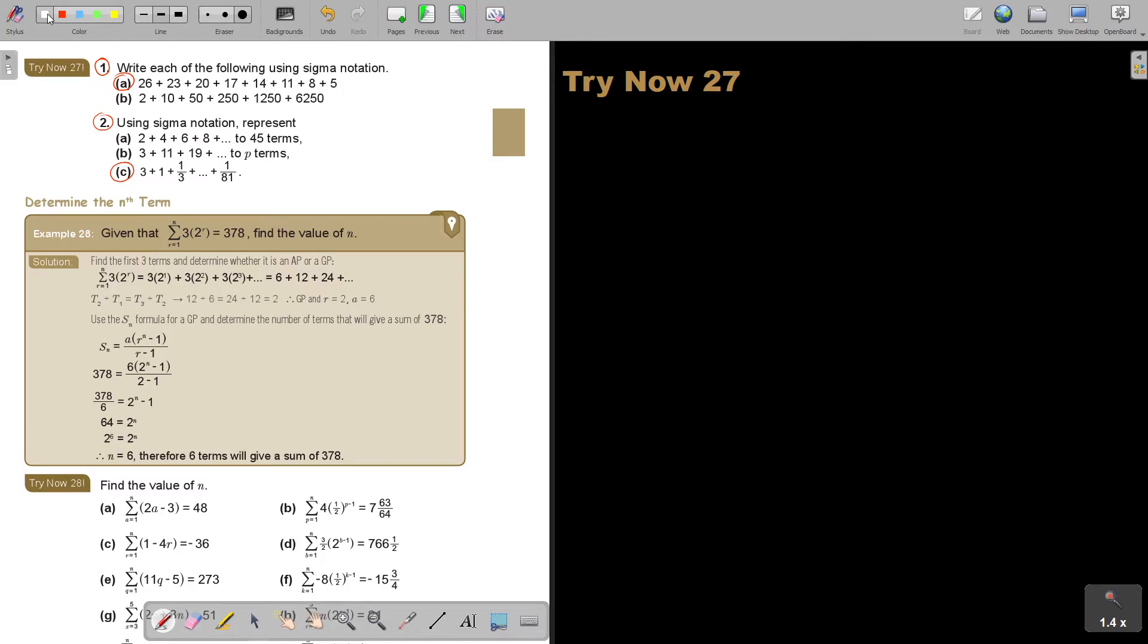Number 2C. Now, in C, it's 3 plus 1 plus a third plus 1 over 9 plus 1 over 27 plus 1. This is a nice one. Because now I have to work it out. I can already see this is not AP. So 1 divide 3 or 1 third divide 1. So I can see the value of R is 1 third. But you can see it by T2 divide T1 or T3 divide T2. This is term 1, this is term 2, this is term 3. So basically, I could have just get 1 divided by 3 or 1 third divide 1, which is also a third. So therefore, GP and R is equal to a third and A is equal to 3.